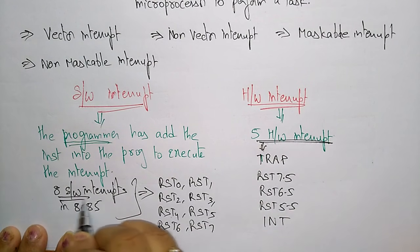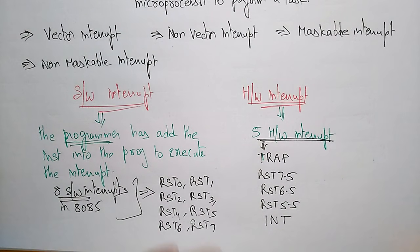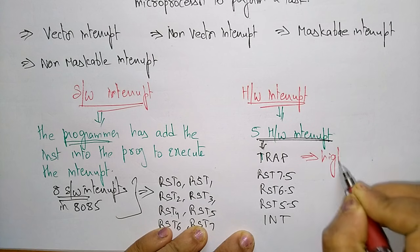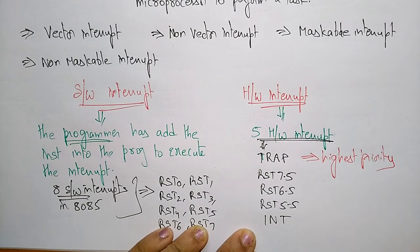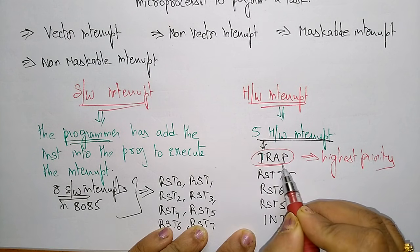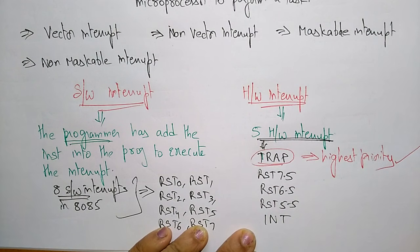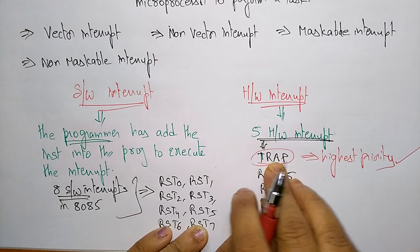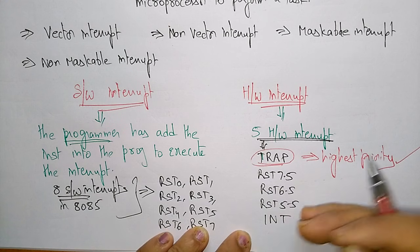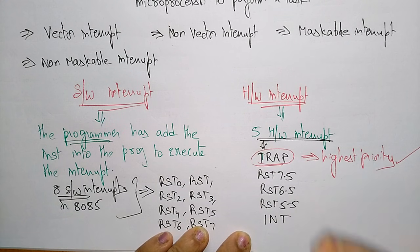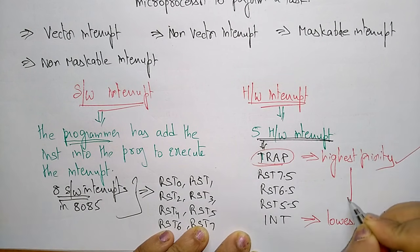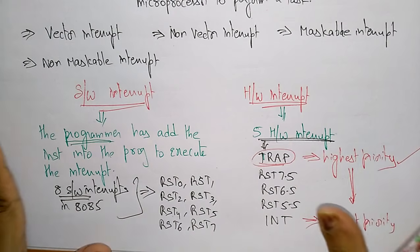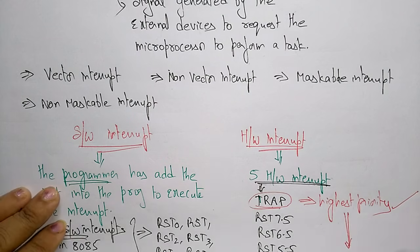Among the hardware interrupts, TRAP has the highest priority. Whenever the TRAP signal is activated while executing a program, that request must be served first. Once the TRAP service request is complete, the processor continues with the previous instructions. INTR has the lowest priority, and priority decreases from TRAP down to INTR.